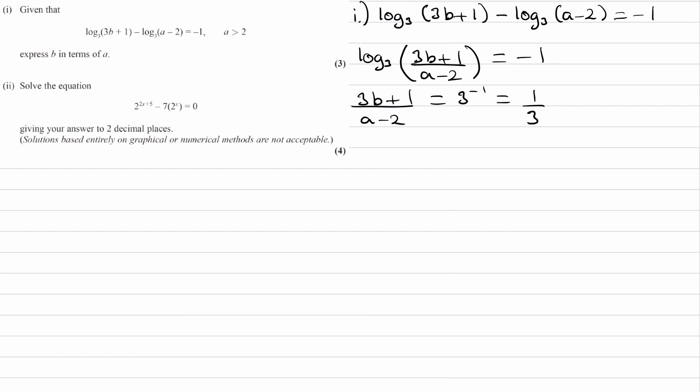We can then rearrange that equation. So multiply the top here by 3, multiply this by a minus 2, and we end up with 3 times 3b plus 1 is equal to 1 times a minus 2. So 9b plus 3 is a minus 2. And then we rearrange for b. So 9b, bring the 3 over, so 9b is then equal to a minus 5, and so b is then equal to a minus 5 over 9.